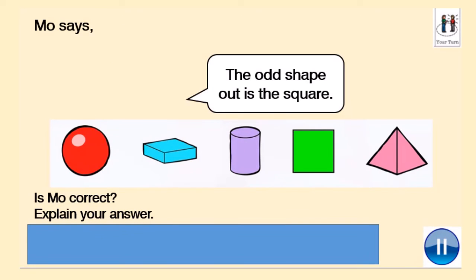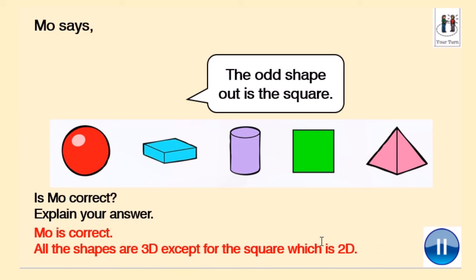Mo says, the odd shape out is the square. We have a sphere, a cuboid, a cylinder, a square and a pyramid. Is the odd shape out the square? Is Mo correct or not? Explain your answer. Pause this video whilst you work that out. Mo is correct because all the other shapes are 3D except for the square, which is 2D. Did you spot that?